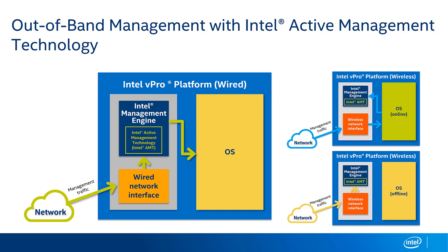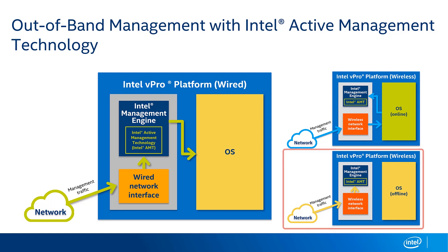The process works a little differently for systems that are running with wireless. In the case of a system using wireless with the operating system online, management traffic actually comes into the OS and then gets passed back to the Intel Management Engine — that's just because of the nature of how the architecture of wireless network interfaces work. However, if the system is not running the OS, management traffic will go straight to the chip set, because Intel AMT will get on the wireless network itself, authenticate using 802.1X or passwords, and allow you to manage that system wirelessly at the hardware level. So when we say 'out of band,' what we mean is that all this management happens in the chip set independent of the operating system.